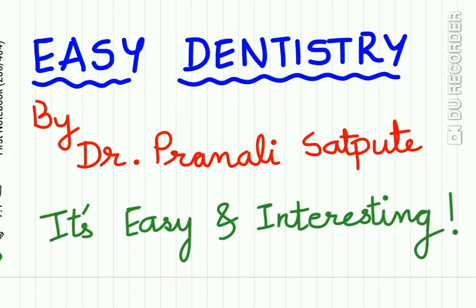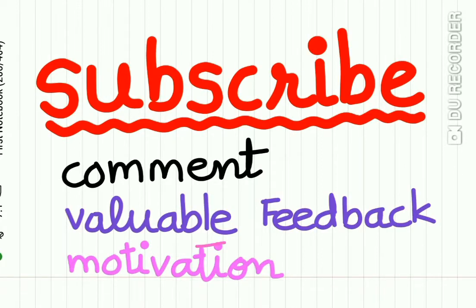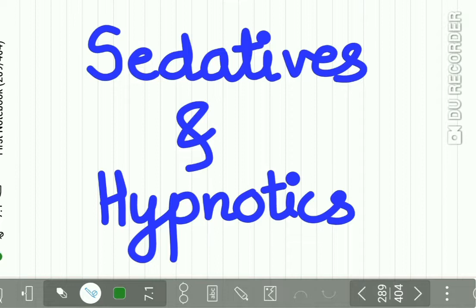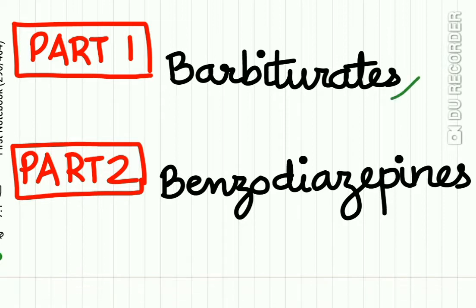Hello everyone and welcome back to Easy Dentistry, a channel that makes dental education incredibly easy and interesting. On high demand by our viewers, we are here with this important topic: drugs acting on the central nervous system. Before we begin, please subscribe to our channel, comment, and give us your valuable feedback. Starting with the first CNS-related drug — sedatives and hypnotics — we will study these drugs in two parts: Part 1 covering barbiturates and Part 2 covering benzodiazepines in detail.